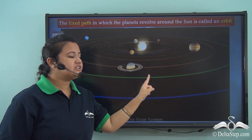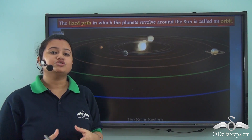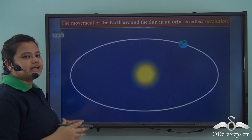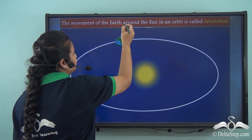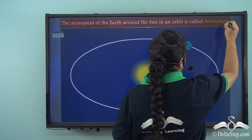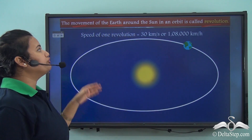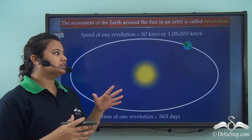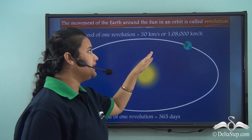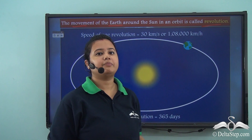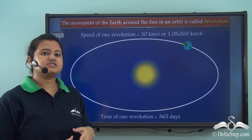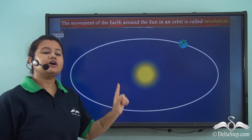This particular movement has a name — do you know what it is called? The movement of the earth and other planets around the sun in an orbit is called revolution. The speed of one revolution of the earth around the sun is 30 kilometers per second or 180,000 kilometers per hour. The earth takes 365 days or one year to complete one revolution.